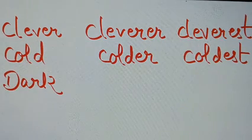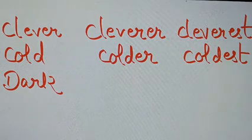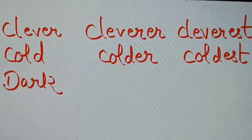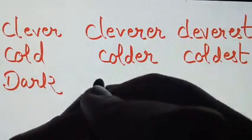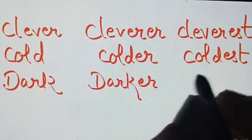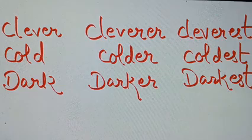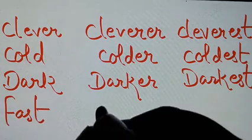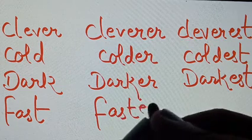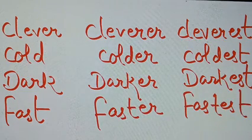The superlative degree is used when we have to choose the best one — EST will be added. So 'dark' becomes 'darker' and the superlative of dark will be 'darkest.' Next we have 'fast' — further 'faster' and its superlative degree will be 'fastest.'